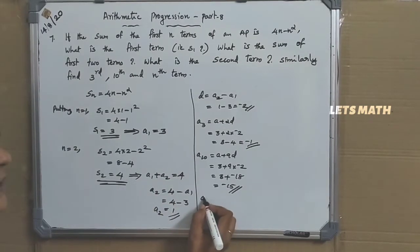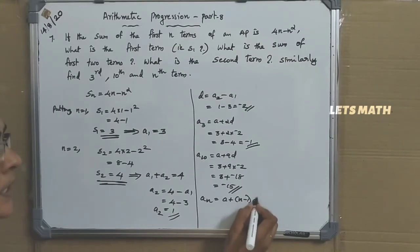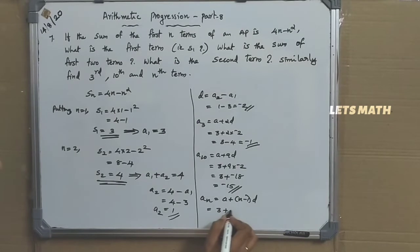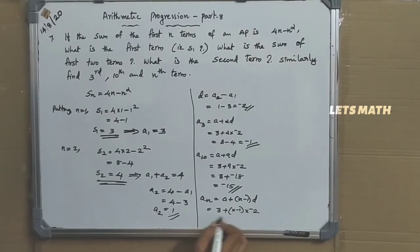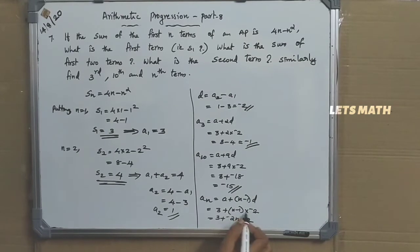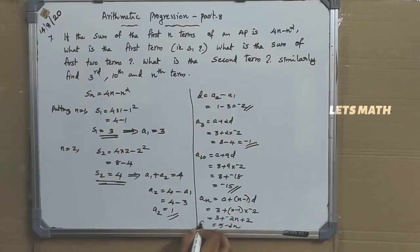For the Nth term AN: AN equals A plus N minus 1 into D. A is 3, plus N minus 1 into negative 2. Expanding: 3 minus 2N plus 2, giving AN equal to 5 minus 2N.